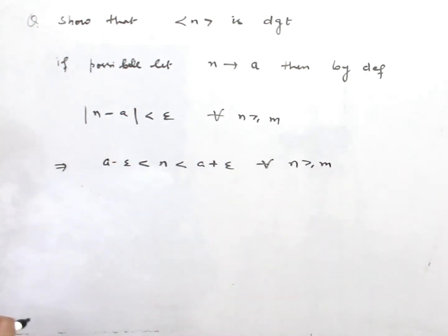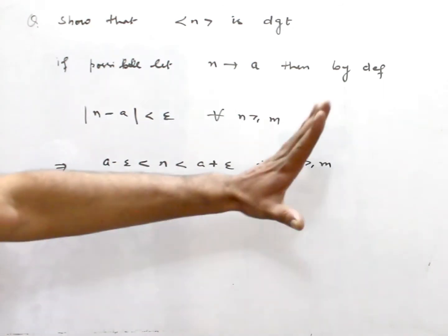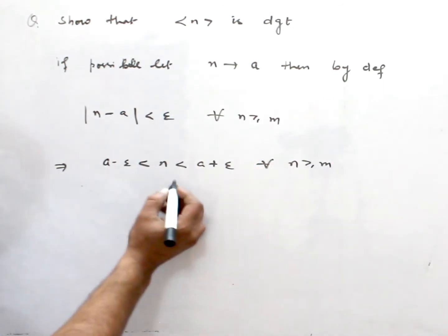Now, this means n is a natural number. It keeps increasing. So what is the point?